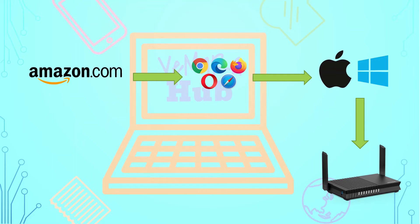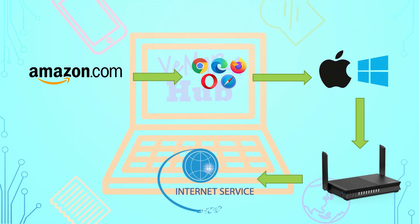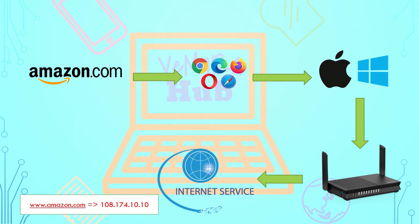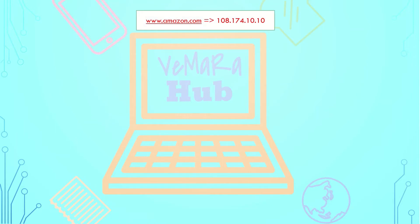If the DNS record is not present in the router cache, it will go and check in the internet service provider cache. Wherever that particular DNS record — the mapping of the host name with the IP address — is found, it will be returned to the browser.